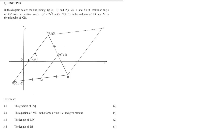In the diagram, the line joining Q with coordinates (-2, -3) and P with coordinates (a, b), where a and b are greater than zero, makes an angle of 45 degrees with the positive x-axis. QP is equal to 7√2 units. N has coordinates x=7 and y=1, and is the midpoint of PR. M is the midpoint of QR.